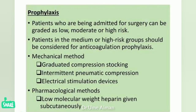Patients admitted for surgery can be graded as low, moderate, or high risk for DVT prophylaxis. Patients in the medium or high risk groups should be considered for anticoagulation prophylaxis. Mechanical methods include graduated compression stockings, intermittent pneumatic compression, and electrical stimulation devices. Pharmacological methods involve low molecular weight heparin given subcutaneously.